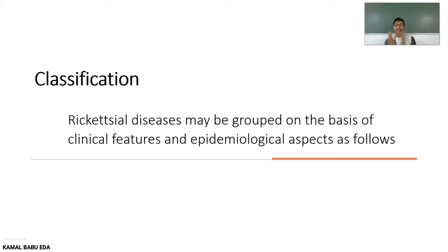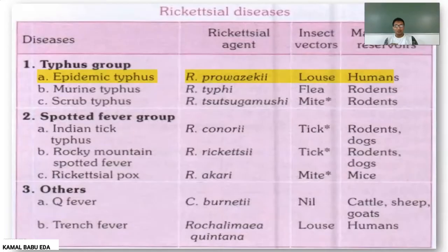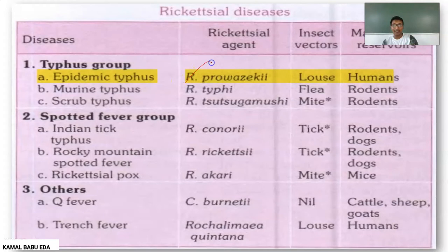The classification here is mainly based on clinical features and epidemiological aspects. Rickettsial diseases are classified into three groups: the Typhus group, the Spotted Fever group, and other types. In the Typhus group, the first one is Epidemic Typhus.